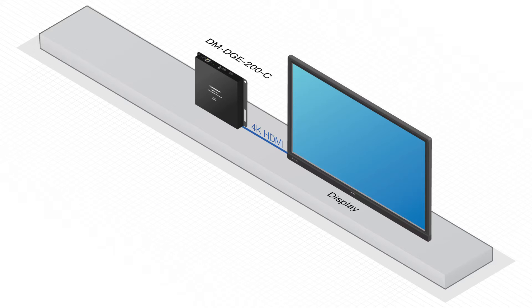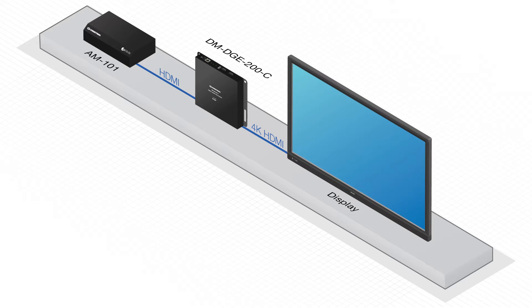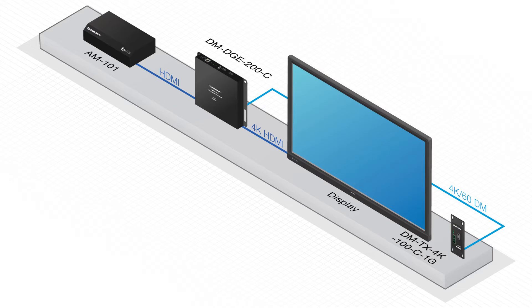In this video, we're going to look at how it can be used in a multi-format video application. First, connect an AirMedia via HDMI at the display next to the DMD GE for wireless presentation. Next, add a 4K DM transmitter, either in the wall or under the table. Here we're using a wall plate transmitter.